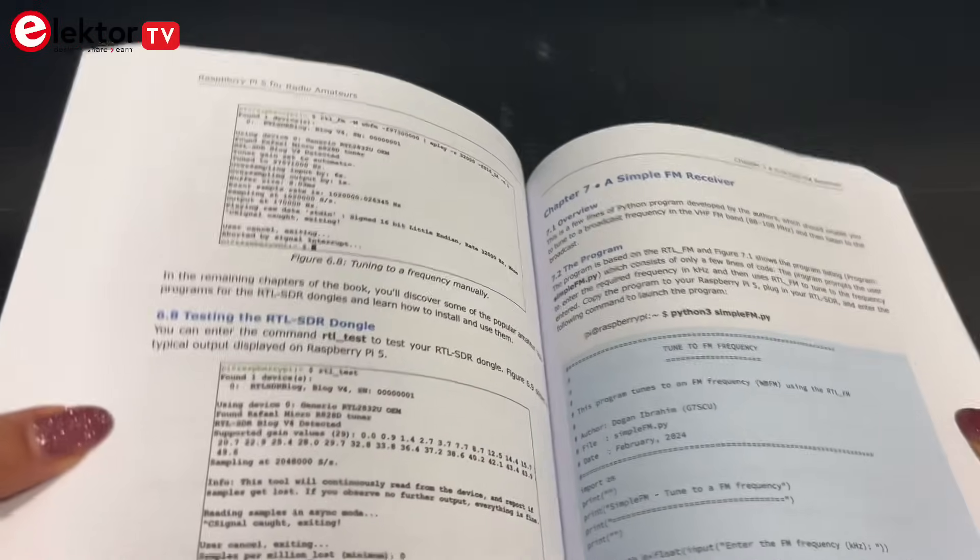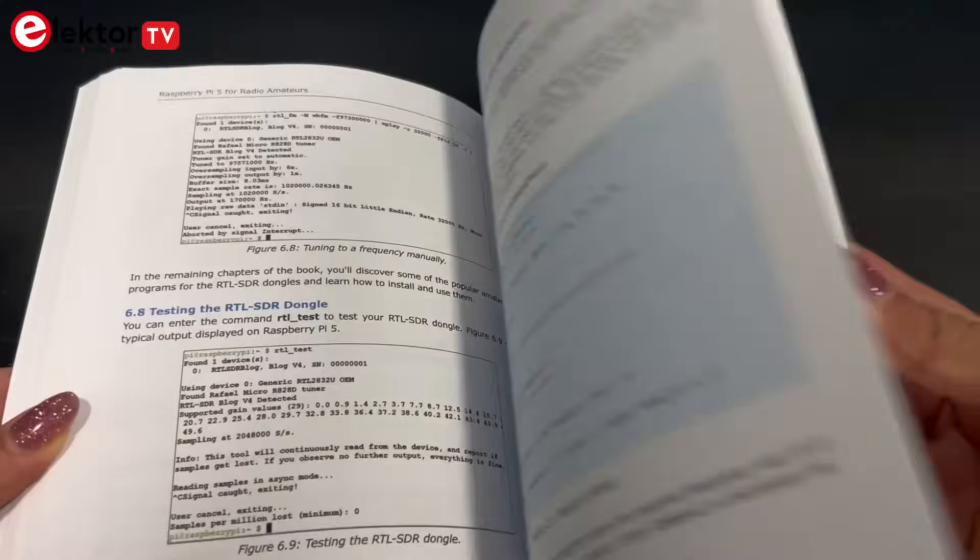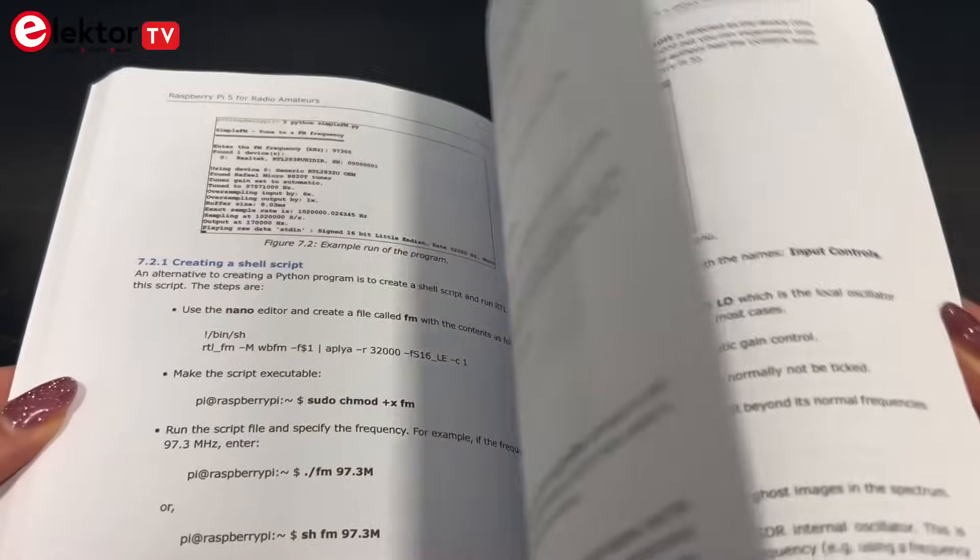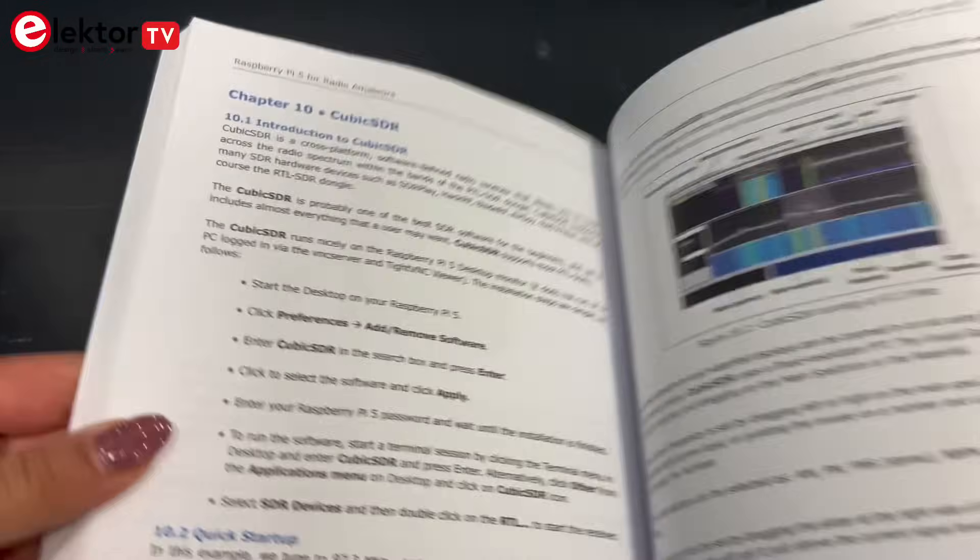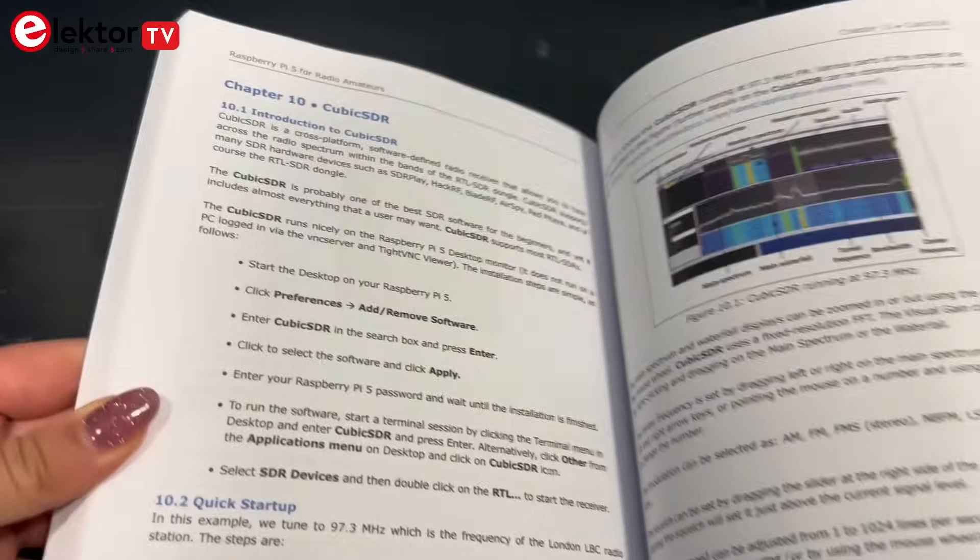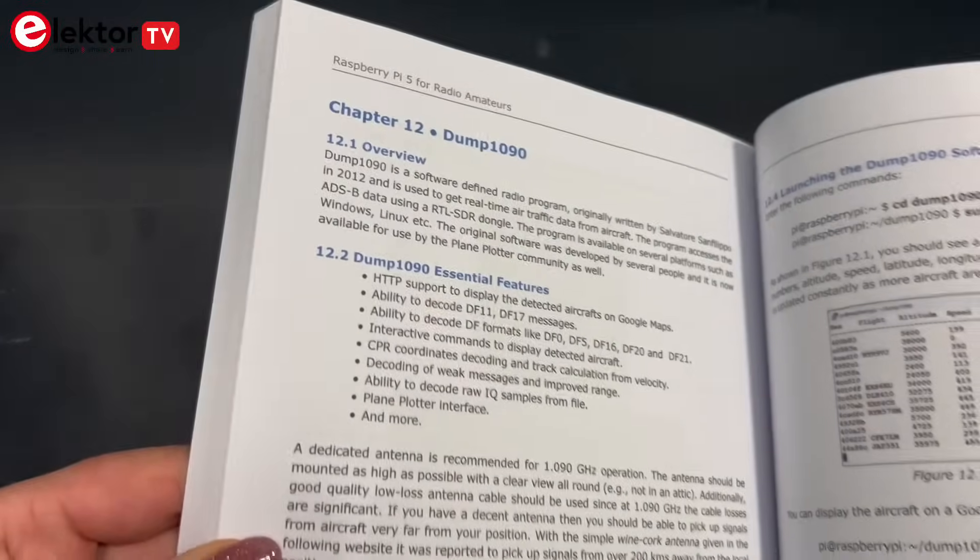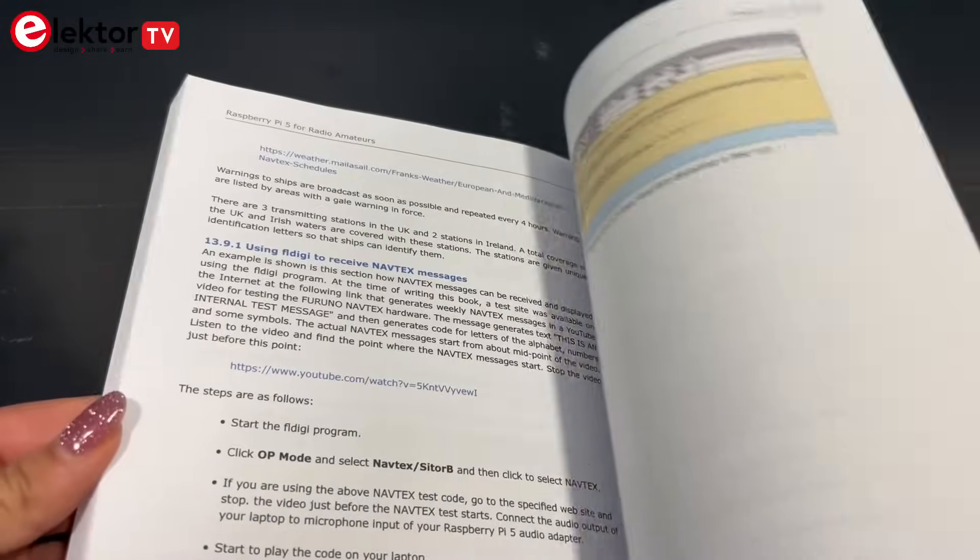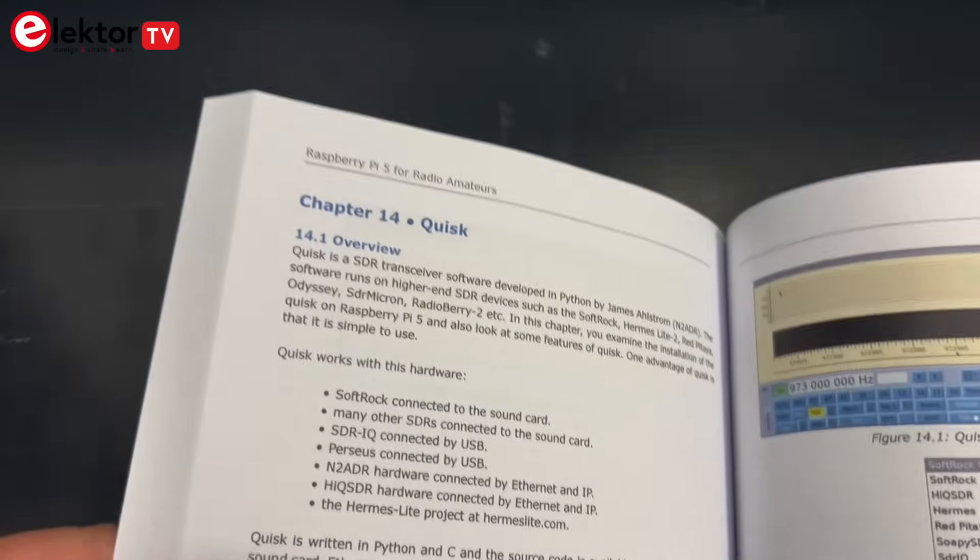Many RTL-SDR programs are discussed in detail, and step-by-step installation guides are provided for practical use on a Raspberry Pi 5. The book is suitable for both beginners and experienced readers. Some knowledge of the Python programming language is required to understand and modify the projects given in the book. A block diagram, circuit diagram, and complete Python program listing is given for each project.